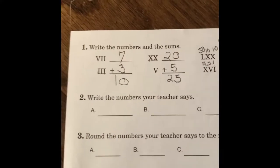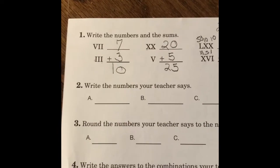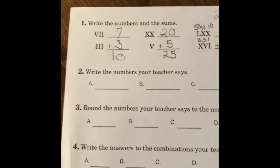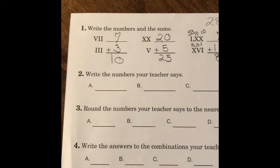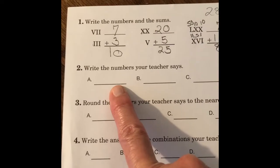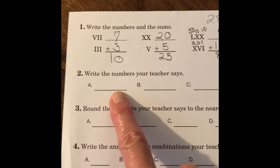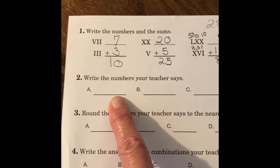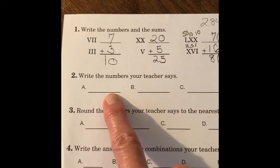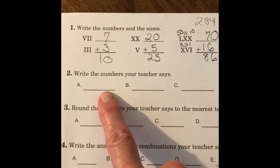Okay, those are our Roman numerals. Number 2, write the number your teacher says. Now I'm going to say a number two times, and you're going to write this number that I say. So we're going to start with A. Write the number, it's actually a fraction, 5 and 1 fourth. Write 5 and 1 fourth.